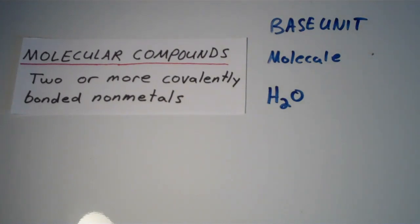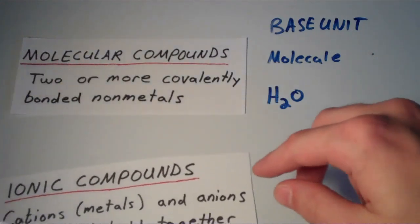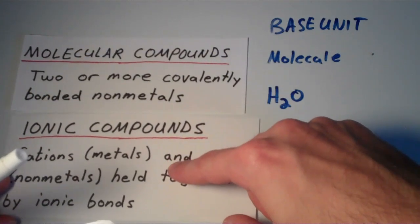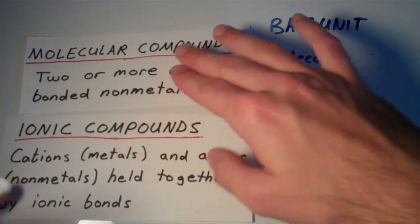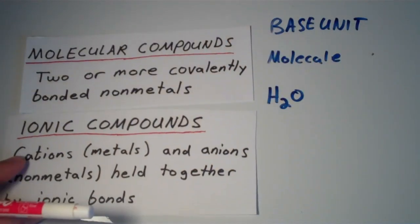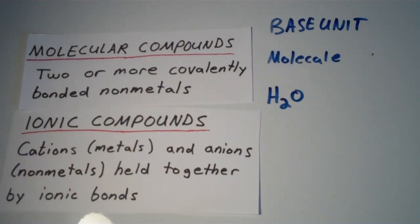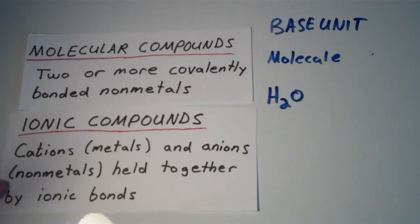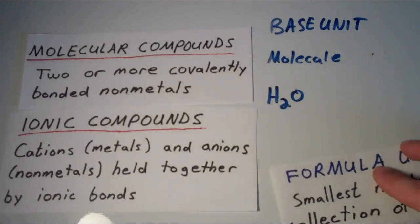And in addition to molecular compounds, we also have ionic compounds. And ionic compounds are cations and anions, which are usually metals and nonmetals respectively, that are held together by ionic bonds. And the base unit of an ionic compound is called a formula unit.